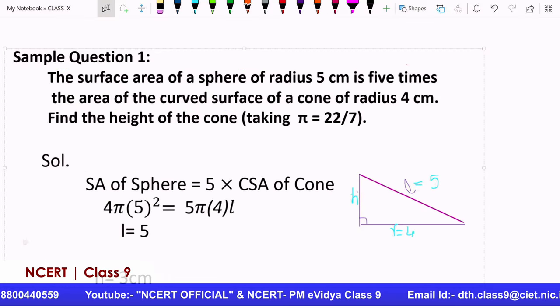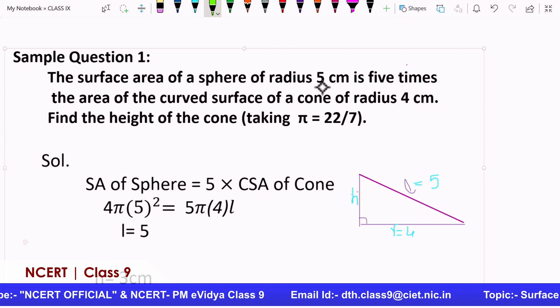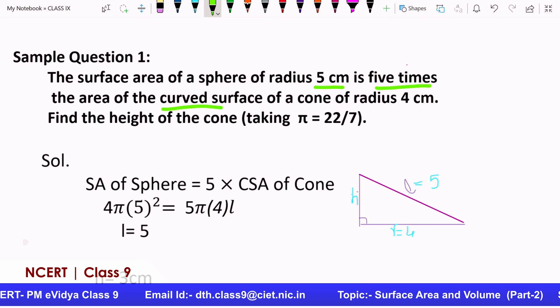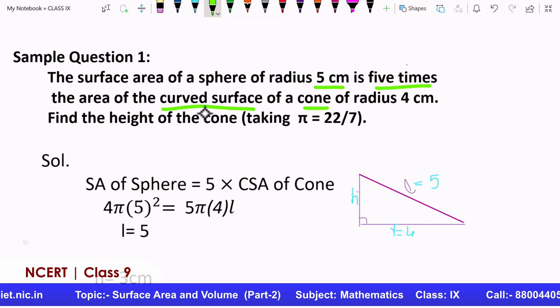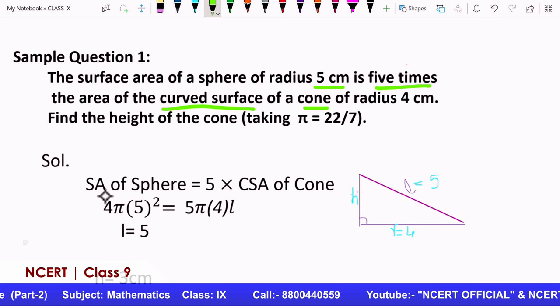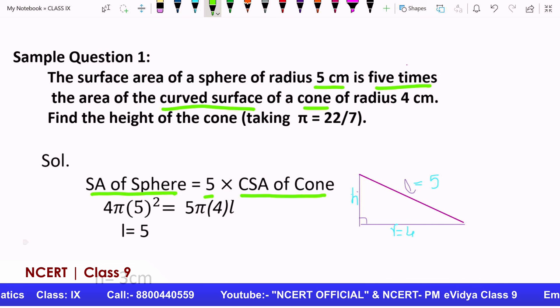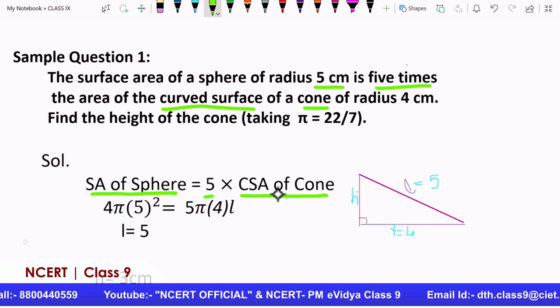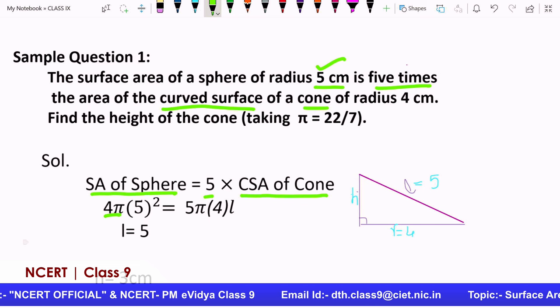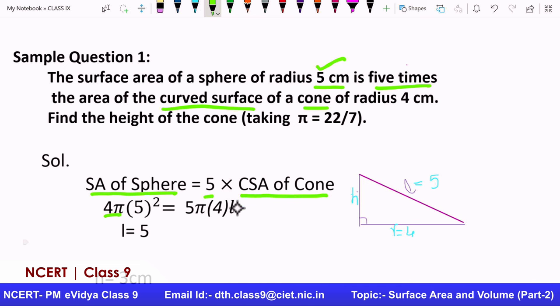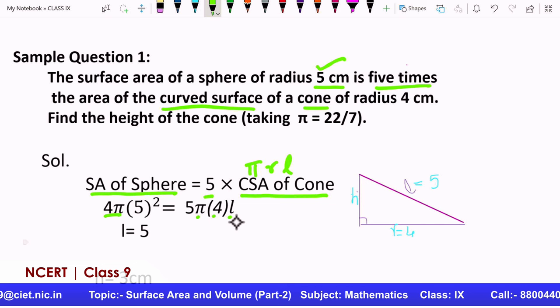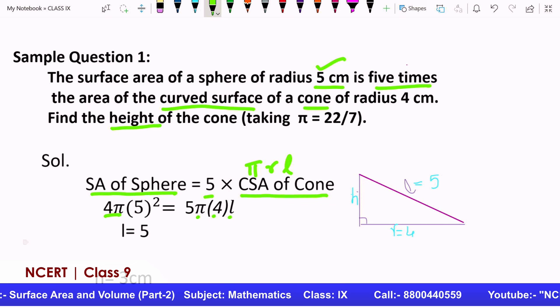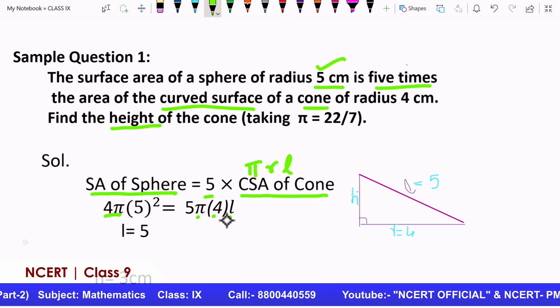Now, we move further to this question. Now see how the questions change. The surface area of a sphere of radius 5 centimeters is 5 times the area of the curved surface area of the cone. So let us put the value of the curved surface area of the cone. So this is the information we have: surface area of sphere is 5 times the curved surface area of the cone. So let us put the values of the surface area formula. Surface area of the sphere, 4π, radius is given as 5 square, 5 multiplied by curved surface area of the cone, it is πrl. That is the curved surface area of the cone, it is πrl. r is given, l is not known.